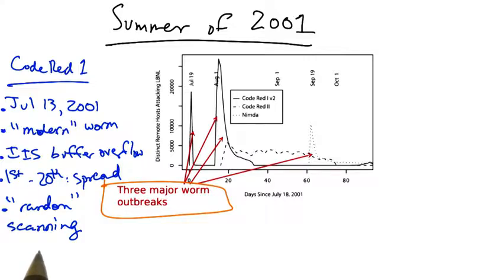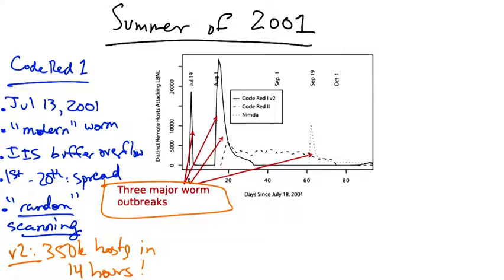Version 2 of Code Red 1 was actually released six days later and fixed the random scanning bug so that each instance of the worm scanned a different part of IP address space. After the scanning bug was fixed, the worm was able to compromise 350,000 vulnerable hosts in a matter of only 14 hours. By most estimates, that was the complete set of hosts running the vulnerable version of IIS on the entire internet.